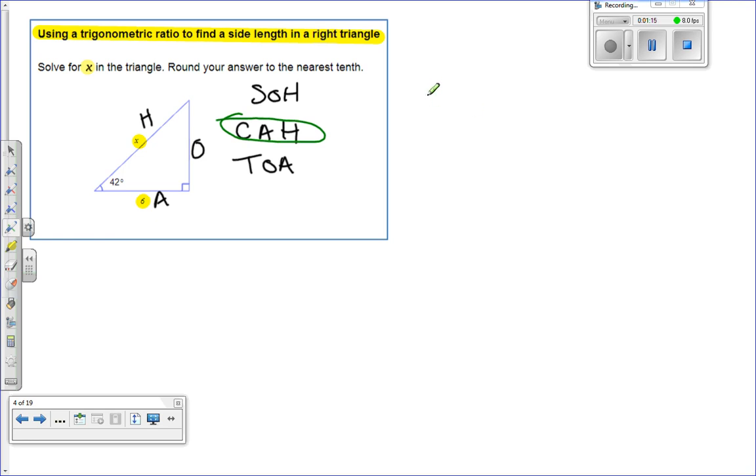So remind yourself, cosine of theta equals the adjacent divided by the hypotenuse. We're just going to fill in what we know.